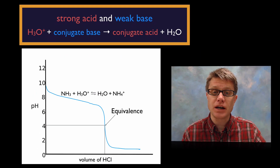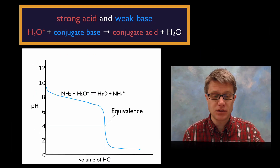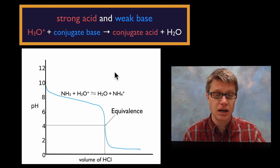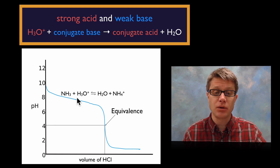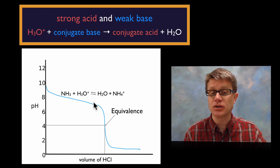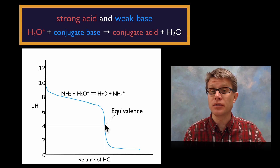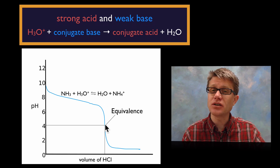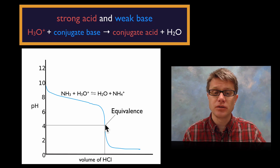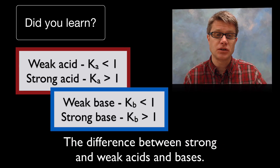Likewise, for a strong acid and a weak base: we start at a really high pH, and as we add the acid it drops quickly. But a buffer solution forms in the middle region, and the equivalence point is going to be lower than 7 in this case. You should understand what those titration curves look like in each of those three different situations.